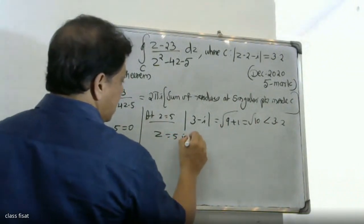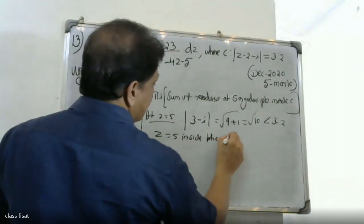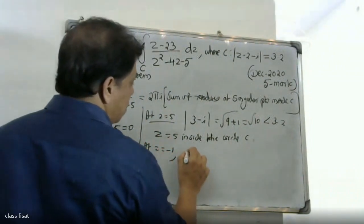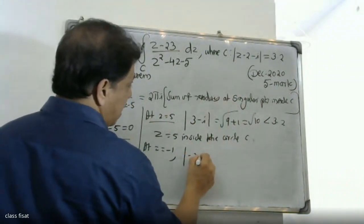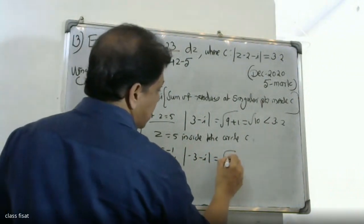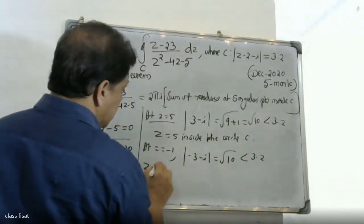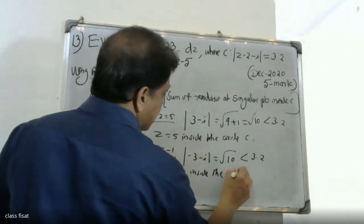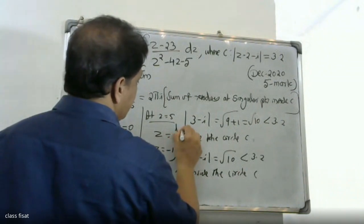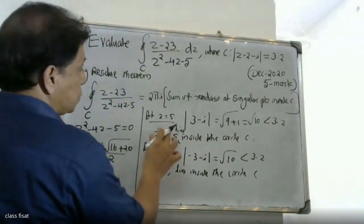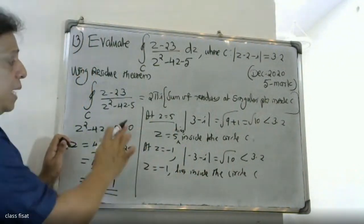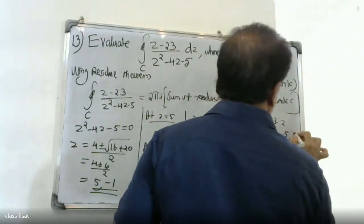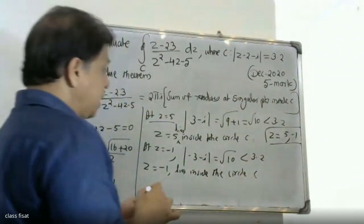We check which singular points lie inside the circle C. We compute |z - 2| for each point. For z = -1: |-1 - 2| = |-3| = 3, which is less than 3.5, so z = -1 lies inside C. For z = 5: |5 - 2| = 3, also less than 3.5, so z = 5 lies inside C.